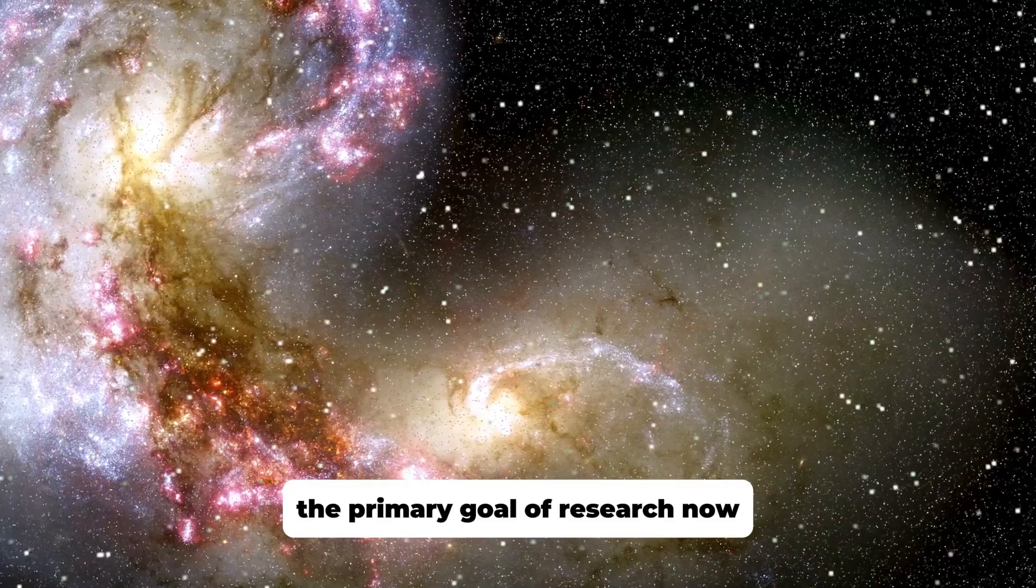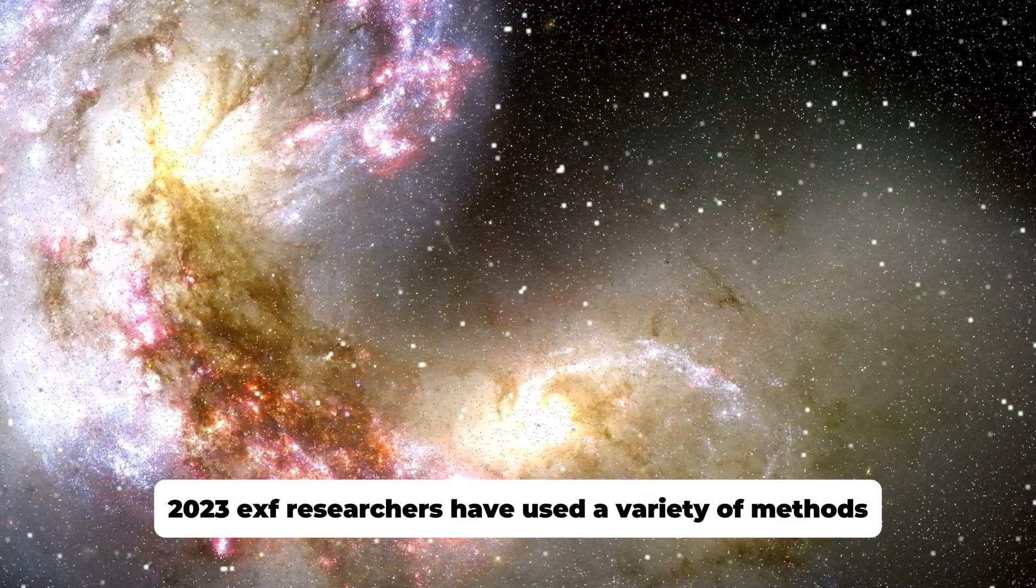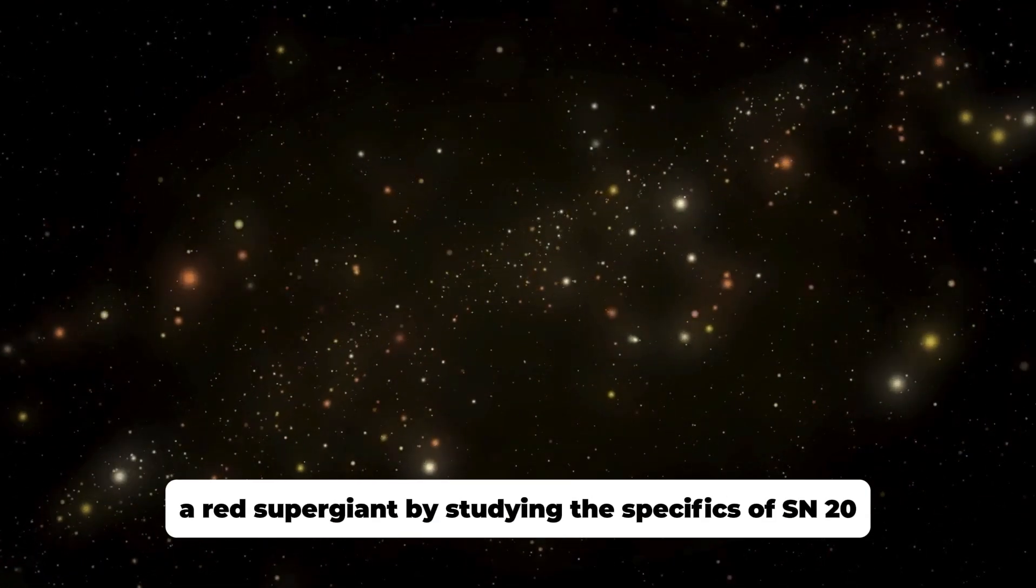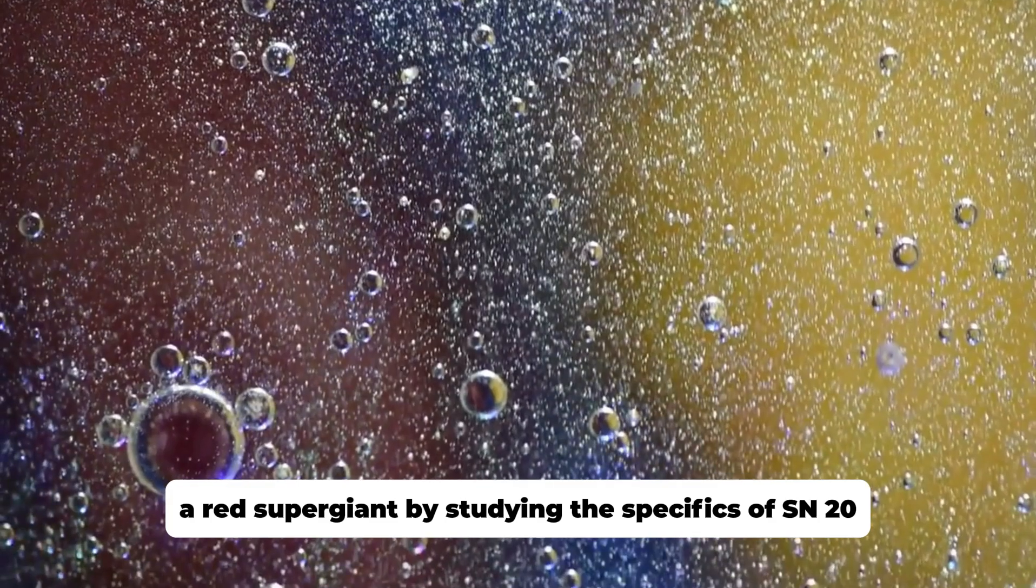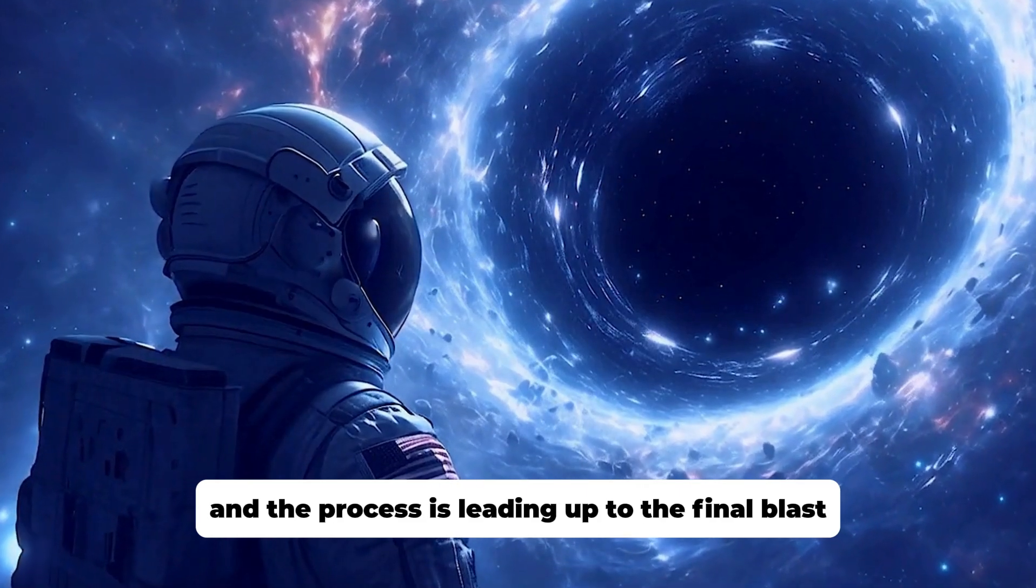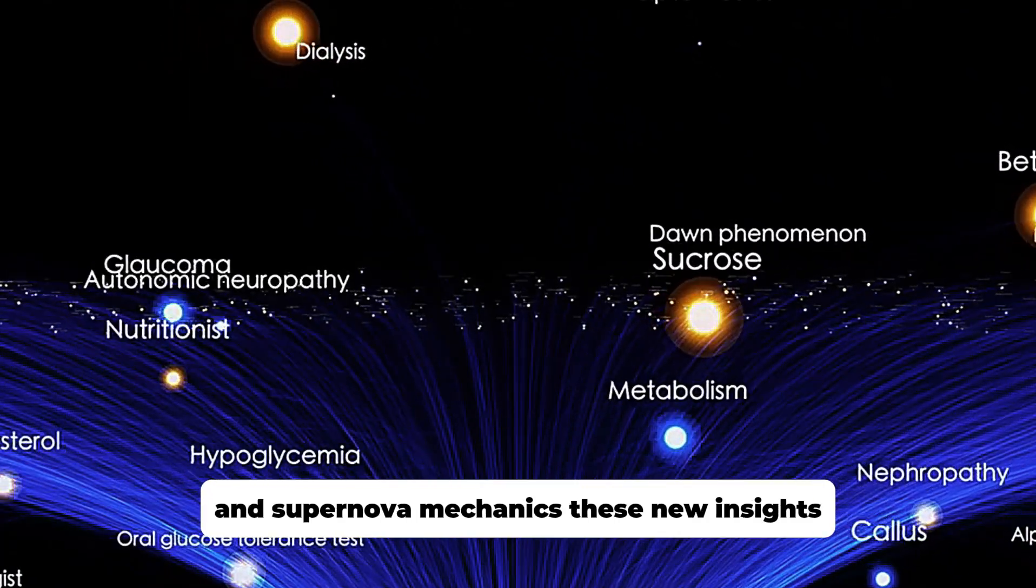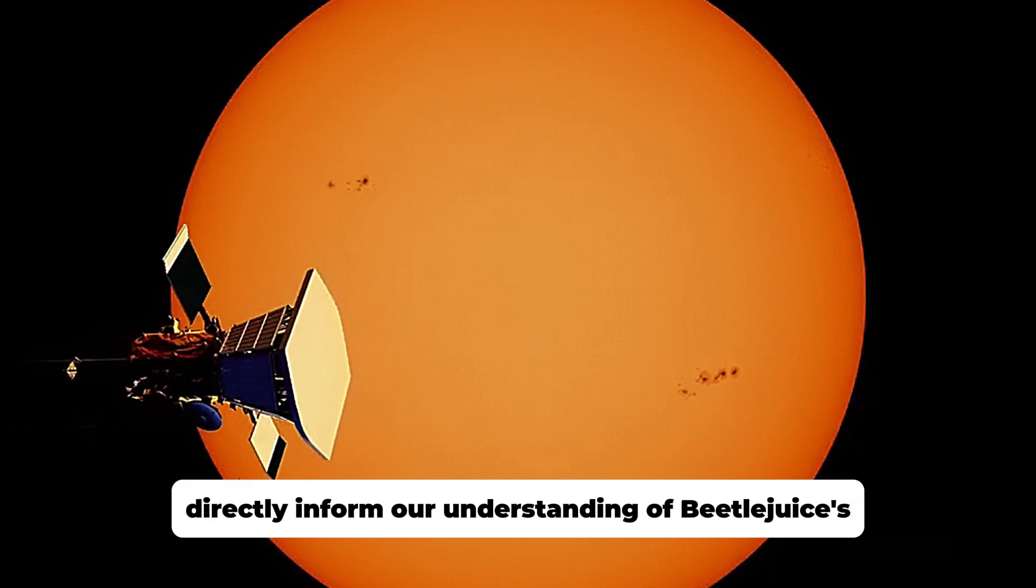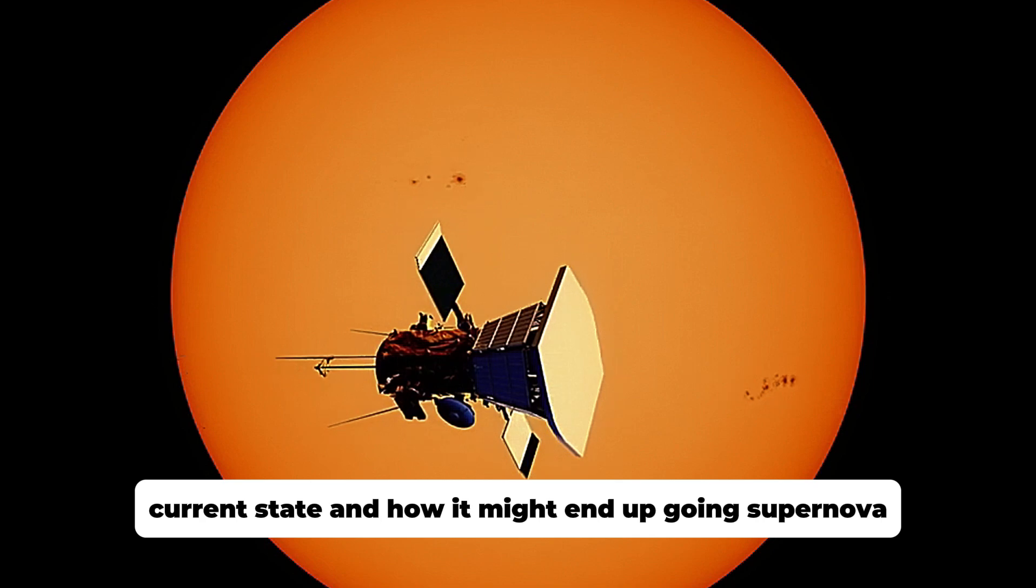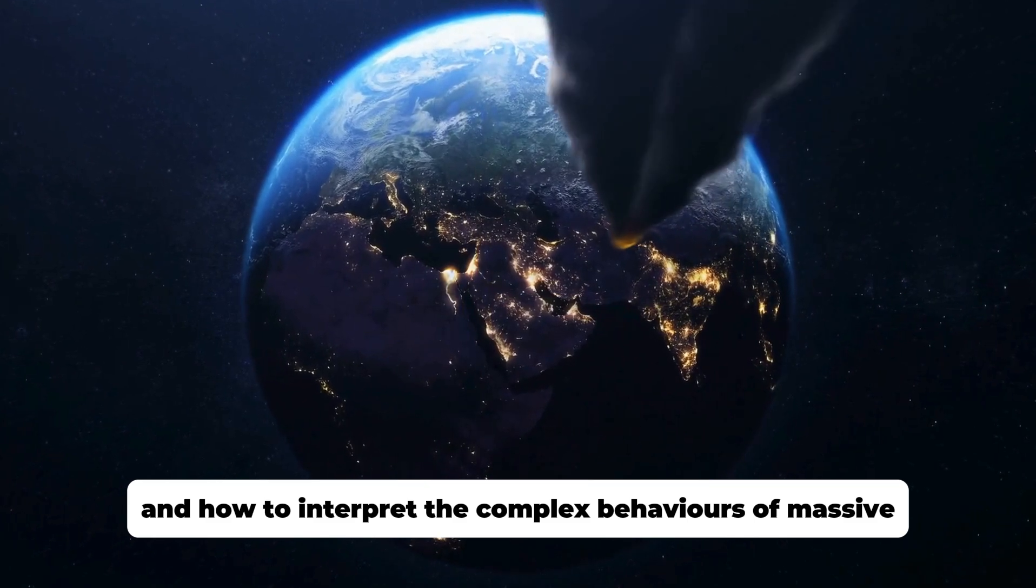The primary goal of research now is to identify the progenitor star of SN2023EXF. Researchers have used a variety of methods and statistics to suggest a likely candidate, a red supergiant. By studying the specifics of SN2023EXF's explosion, such as the characteristics of its progenitor star and the processes leading up to the final blast, astronomers can refine their models of stellar evolution and supernova mechanics. These new insights directly inform our understanding of Betelgeuse's current state and how it might end up going supernova.